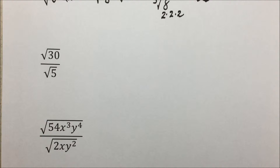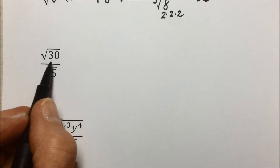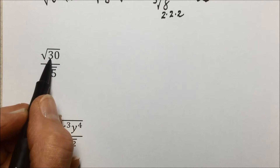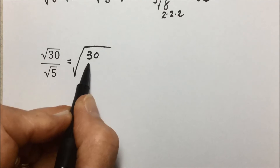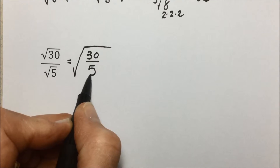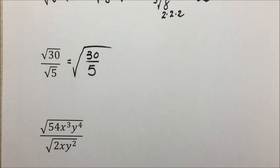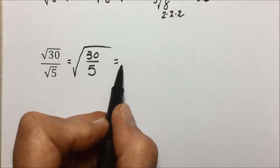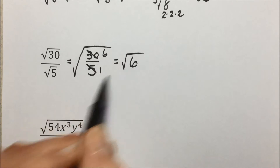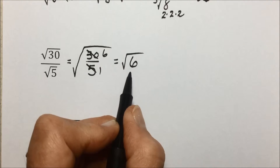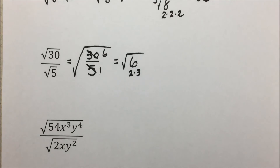In the next one, we have the quotient rule where they're already separated. 30 isn't a perfect square — it's 5 times 6 — but if we combine them back under one radical going the other direction on the quotient rule, we can simplify. 30 divided by 5 reduces to the square root of 6, since 5 divided by 5 is 1. 6 is composite with prime factorization 2 times 3, and since both are to the 1st power, the square root of 6 is as simplified as we can get.